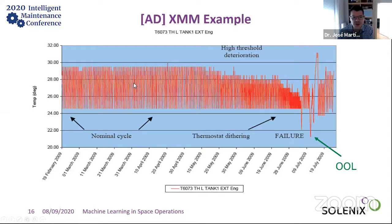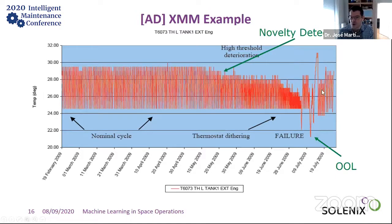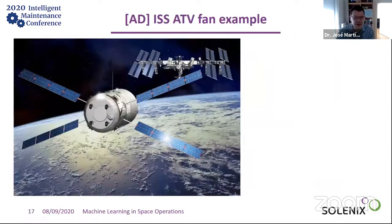Here's a simple example: a thermistor showing temperature going up and down because spacecraft need temperature regulation. This had been working fine for 10 years. One day the out-of-limits alarm triggered, and you can see the value going down. Our novelty detection system detected the anomaly two months earlier. This is what I like about this example — it shows we can detect a coming anomaly two months in advance, something out-of-limits monitoring cannot do.